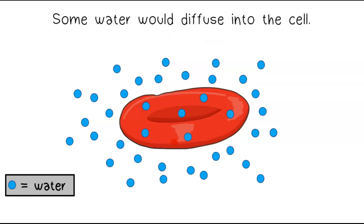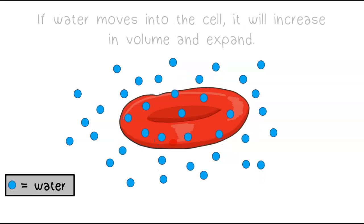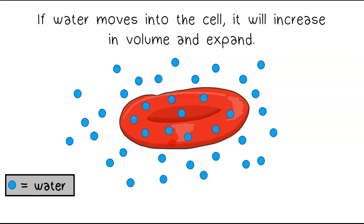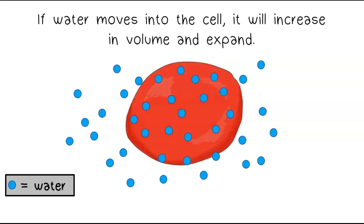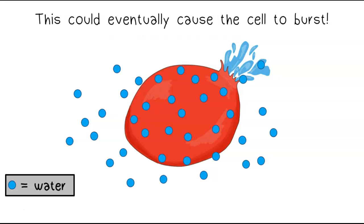Some water would diffuse into the cell. If water moves into the cell, it will increase in volume and expand. This could eventually cause the cell to burst.